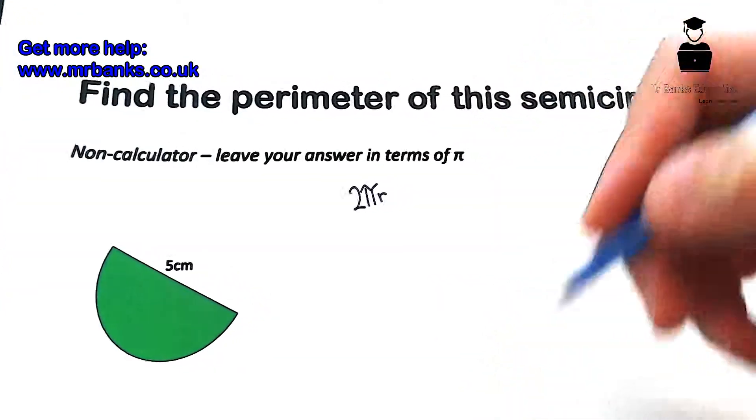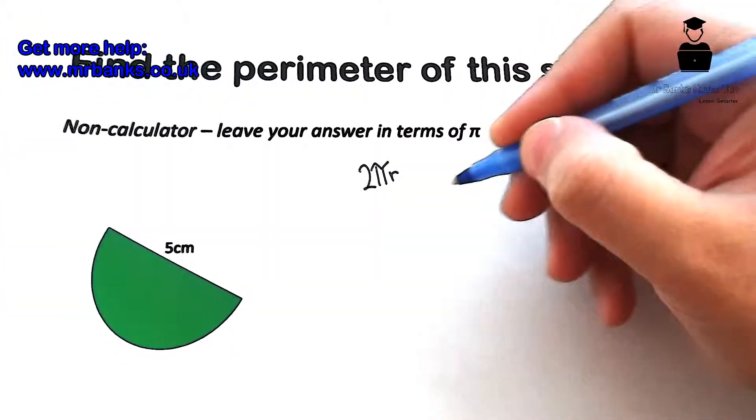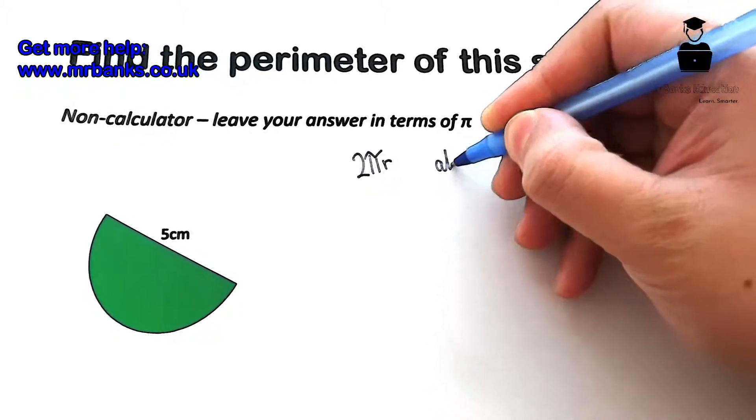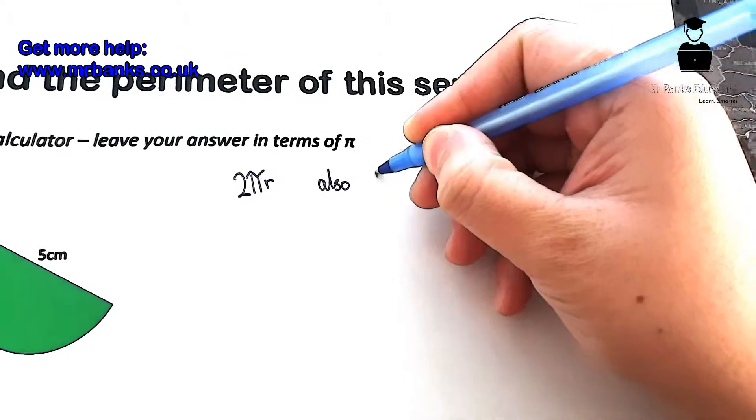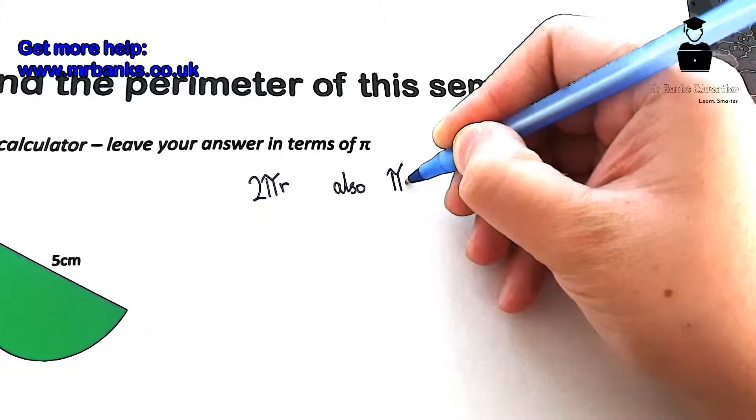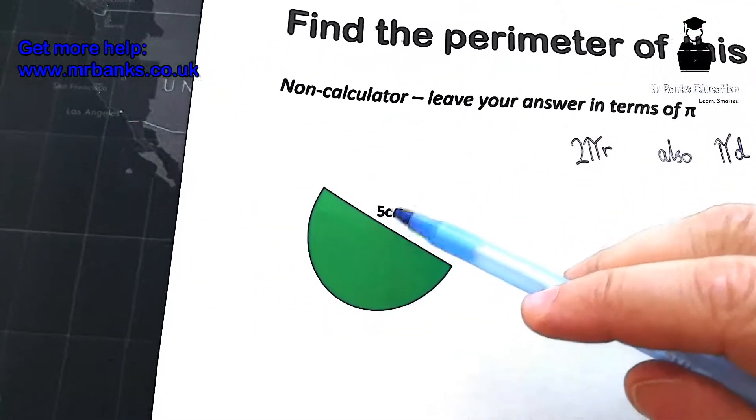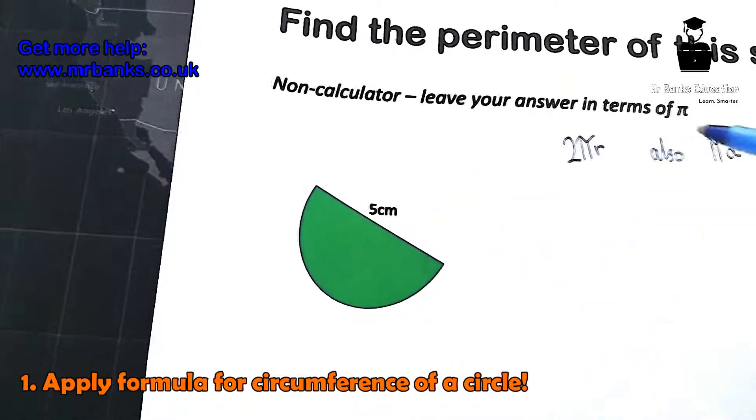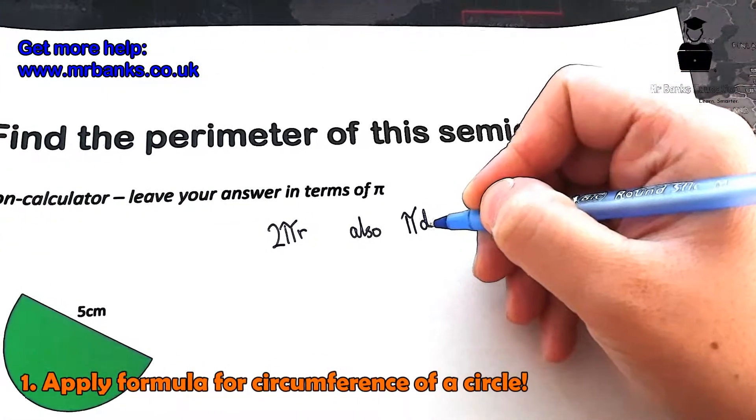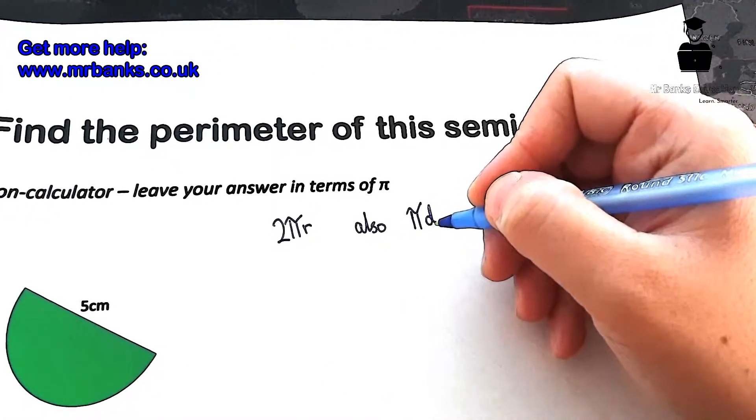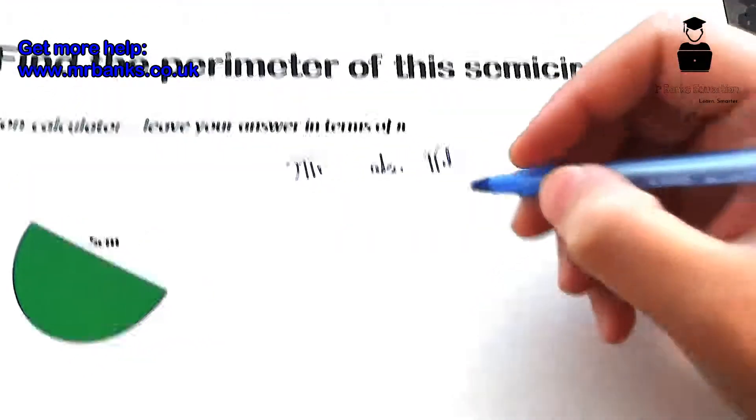It's also πd. It depends on how you prefer it. We've actually been given the diameter of the circle here, so it's probably easier to use this. So d equals 5.